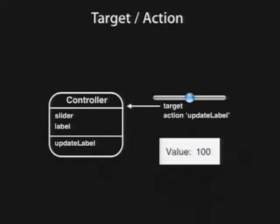In the other direction, these UI elements utilize a mechanism called target-action, whereby you take a button, slider, or whatever element, and say: here's the object I want you to message when some event happens, and here's the method I want you to call when the button gets clicked or the slider gets moved. This allows UI elements to be used out of the box in a generic way without requiring subclassing, and allows you to extend behavior. We're going to do a quick demo of a very basic iPhone application using the iPhone simulator, and you'll see both outlets and target-action in use.